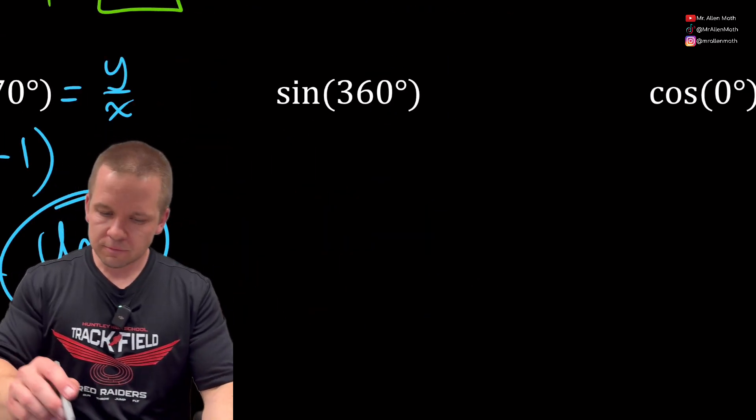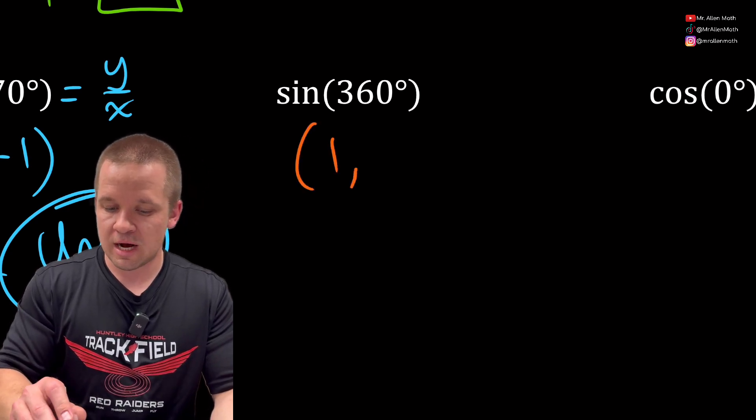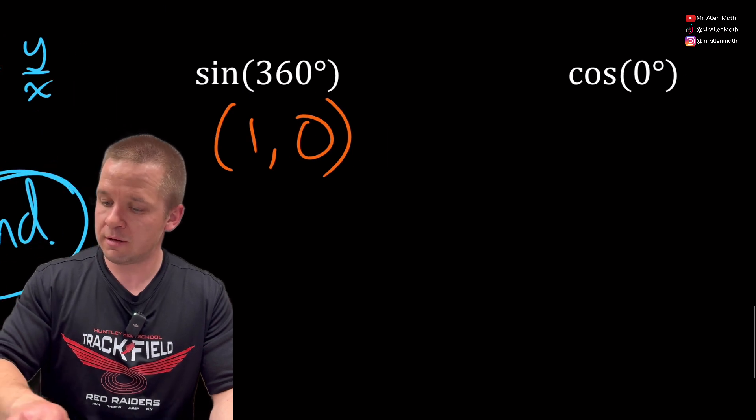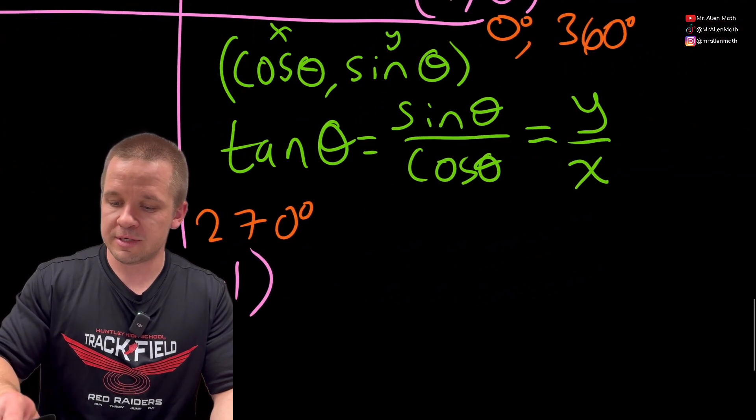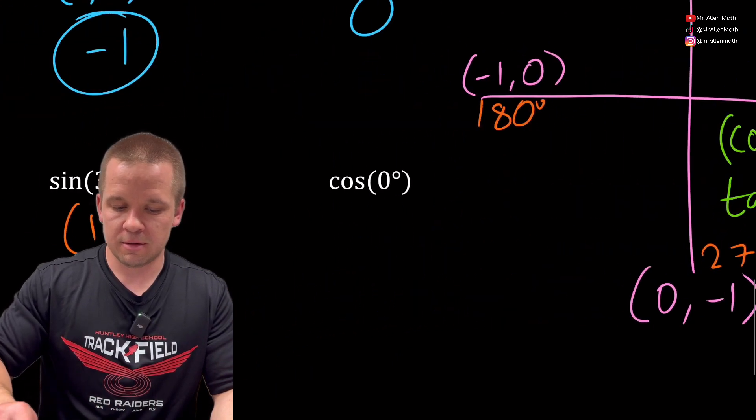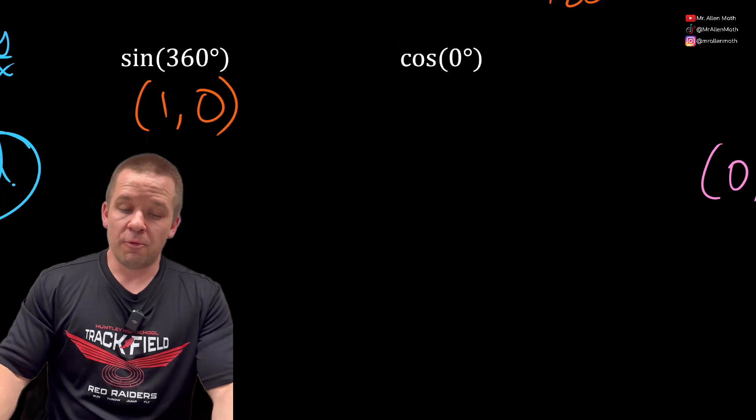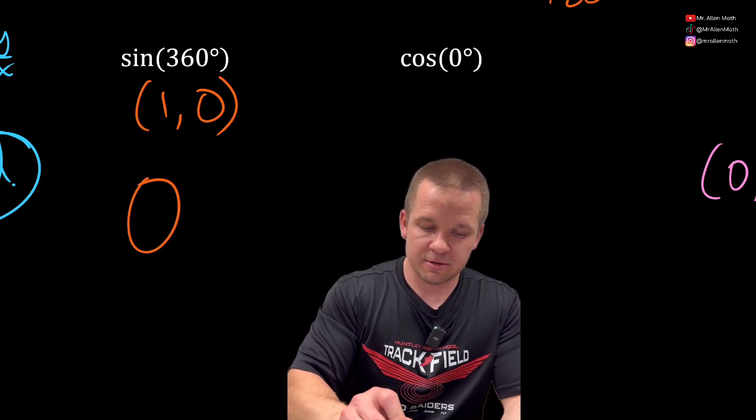How about sine of 360? What's the ordered pair at 360? It is (1,0), isn't it? It's all the way around. Let's pop back over here. 360, (1,0). So what's sine? Sine is the y-coordinate, the answer is zero.